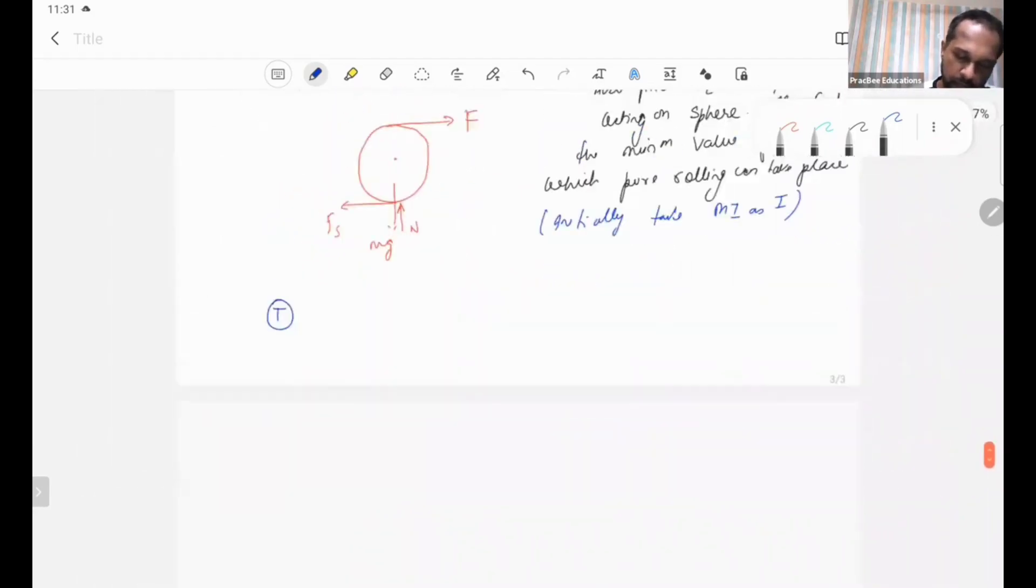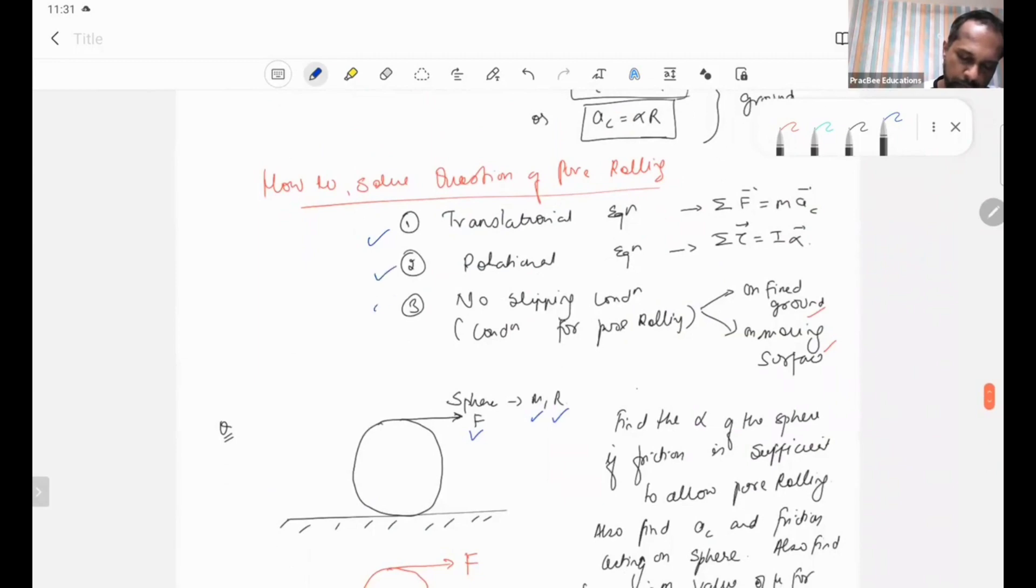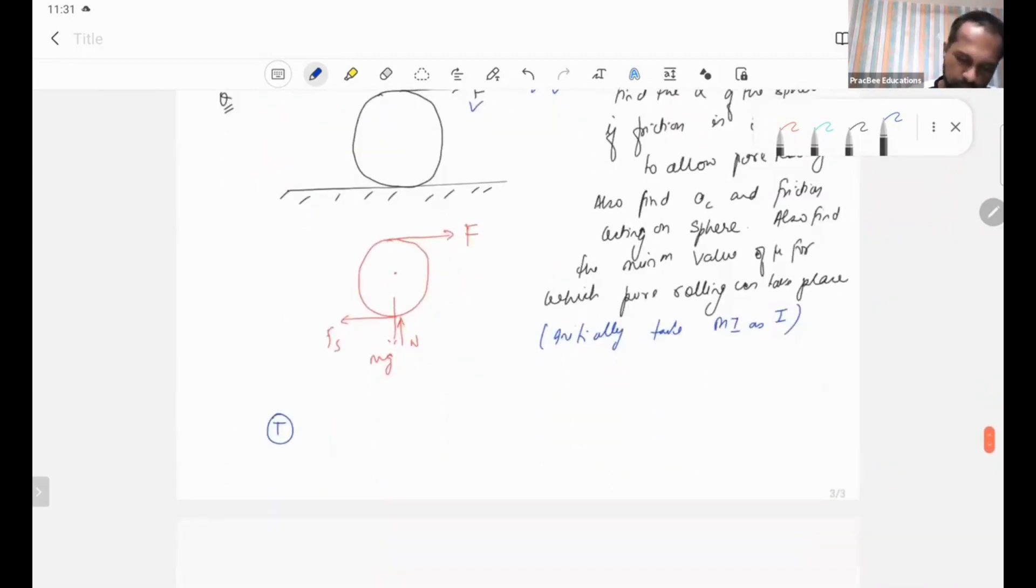First of all, I will show you the translational equation. I have told you three equations. So it will be a translational equation. I will just look at the horizontal direction. In the vertical direction, there is no motion, so I am not writing in the vertical direction. So this is F minus Fs equals M times Ac. Let's call this equation number 1.